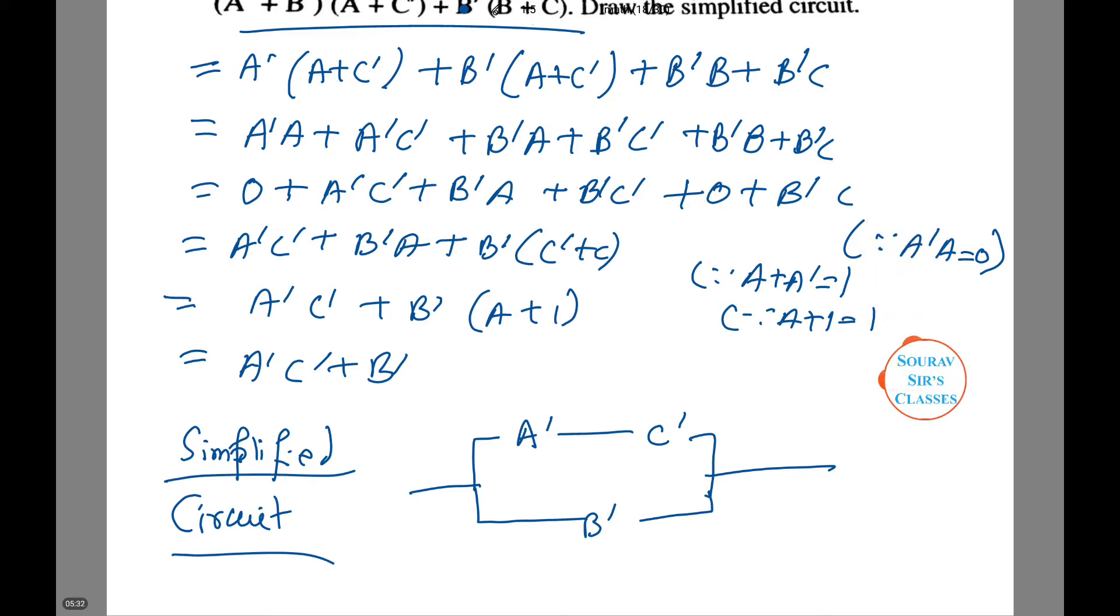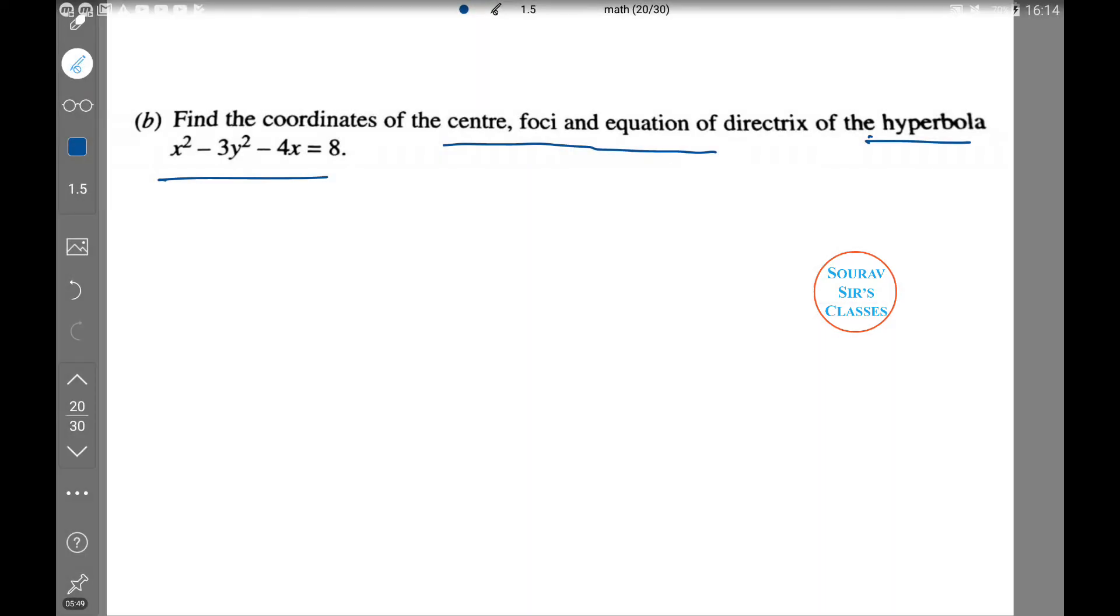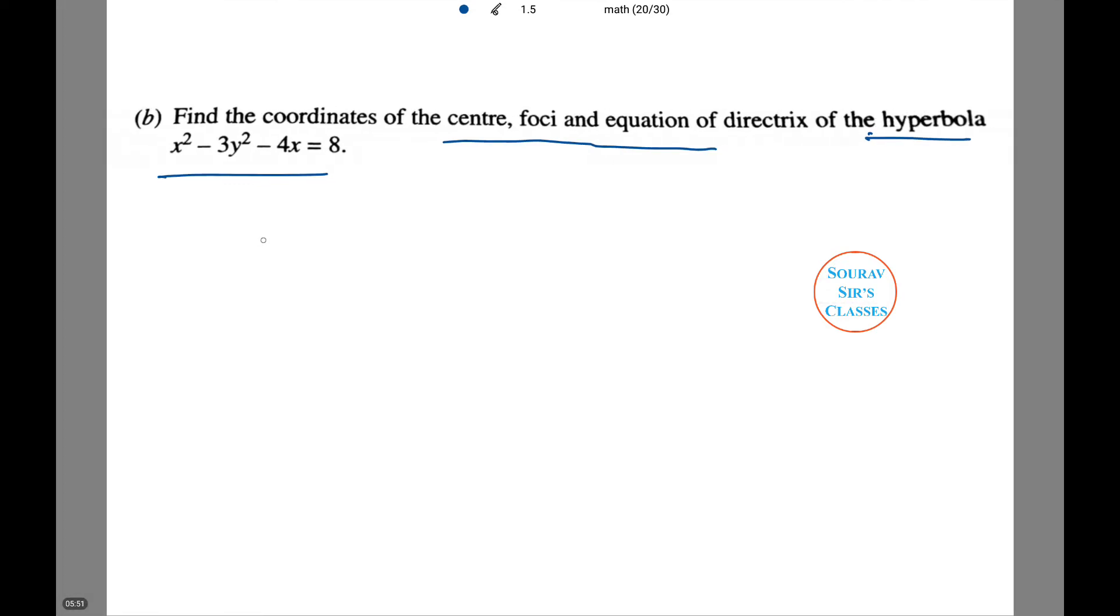Moving on to the next question. In the next question we need to find the coordinates of the center, foci, and equation of the directrix of the hyperbola given as follows. Here the given equation of hyperbola is x squared minus 3y squared minus 4x equals 8, or x squared minus 4x plus 4 minus 3y squared equals 8 plus 4.